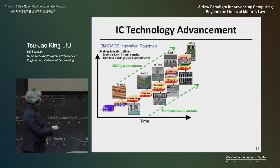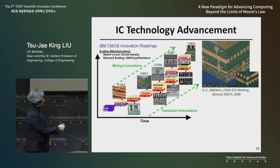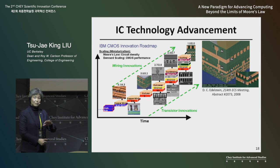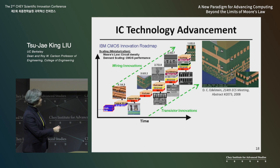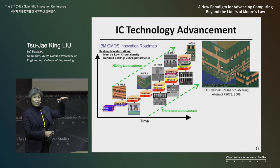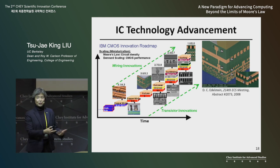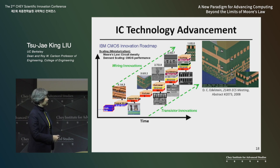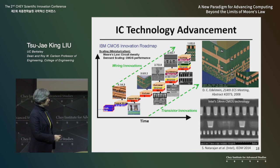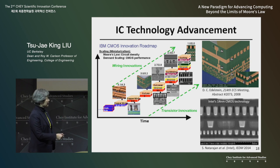Over time, as the industry has advanced from a planar transistor to a FinFET, it has also advanced all the layers of metal wires that interconnect those billions of transistors together. The most advanced Intel technology actually has air gaps — this is a cross-sectional view of a chip showing air gaps between the metal lines.